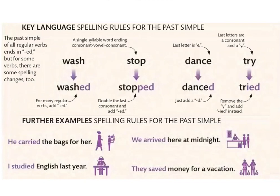'Stop' is a one-syllable word ending in consonant-vowel-consonant (C-V-C). القاعدة تقول we double the last consonant before adding -ED. So stop → stopped. نضيفوا P أخرى then add -ED: stopped.